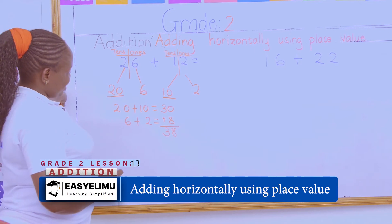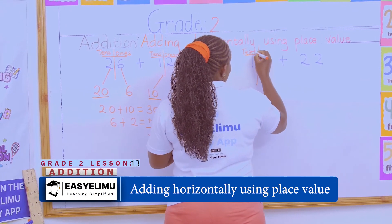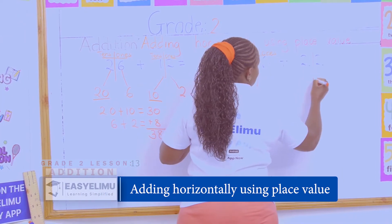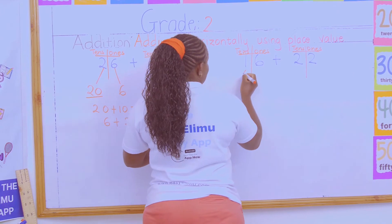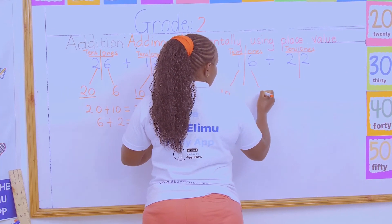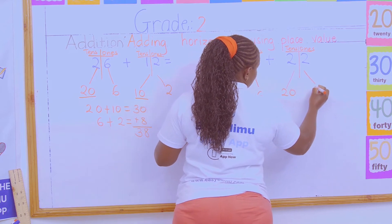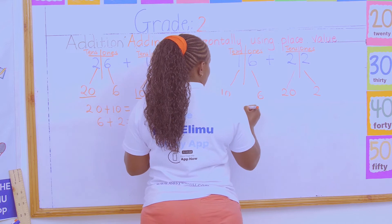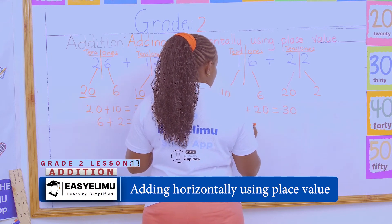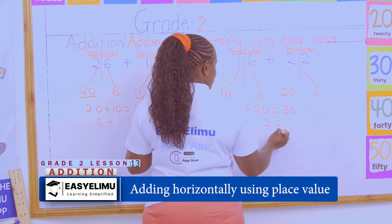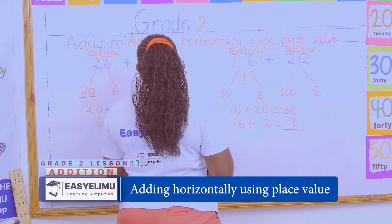Again, we have 16 plus 22. Split each number into tens and ones: one ten equals 10 and six ones equals 6. Two tens equals 20 and two ones equals 2. So 10 plus 20 equals 30, and 6 plus 2 equals 8. Our answer is still 38.